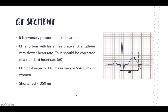Now let's talk about the QT segment, which refers from the start of Q to the end of the T wave. It is inversely proportional to heart rate — shortened with faster heart rates and longer with slower heart rates. Therefore it is variable and must be corrected to be comparable to the standard heart rate of 60. The corrected QT is called QTc.